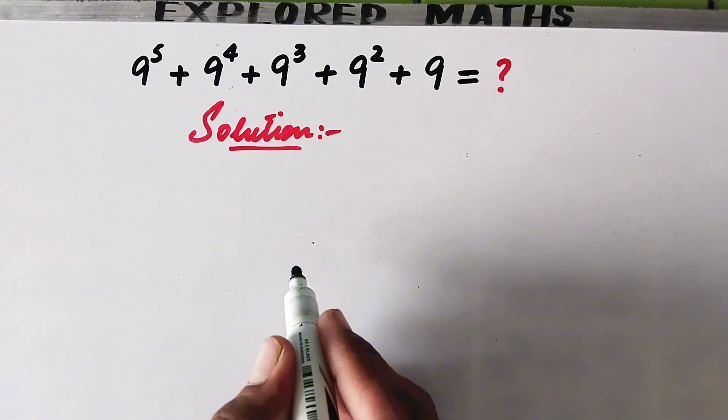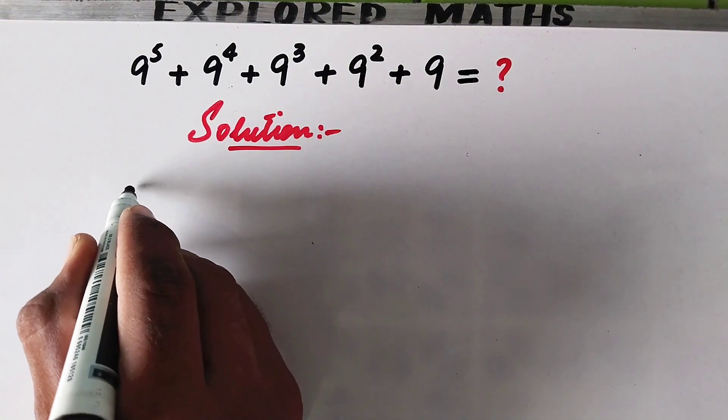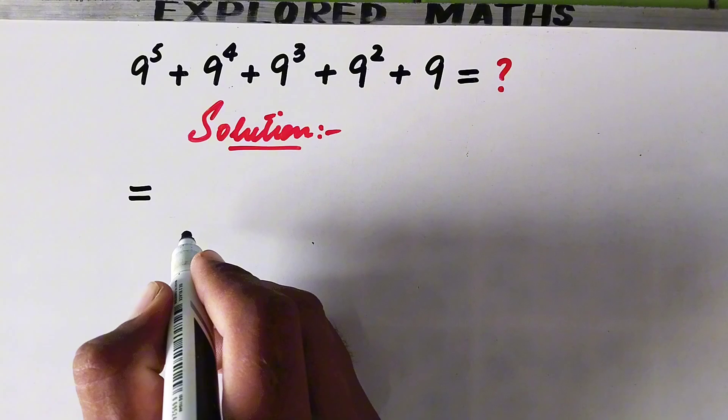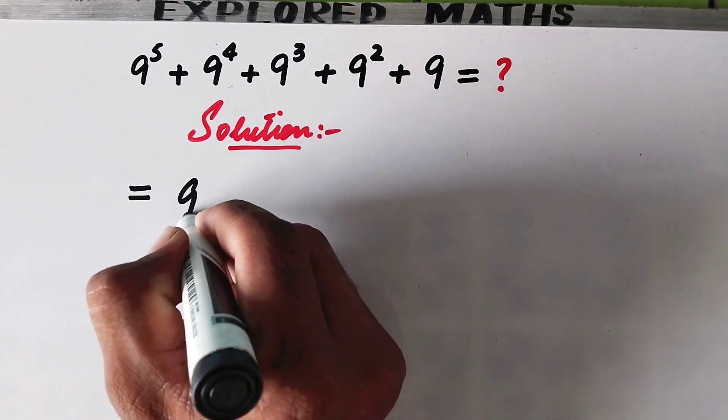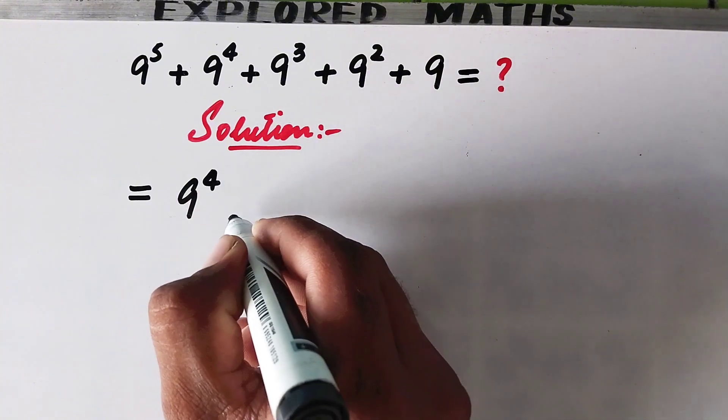In the first step we will write it equal to, and from these two values we can take 9 to the power 4 common.